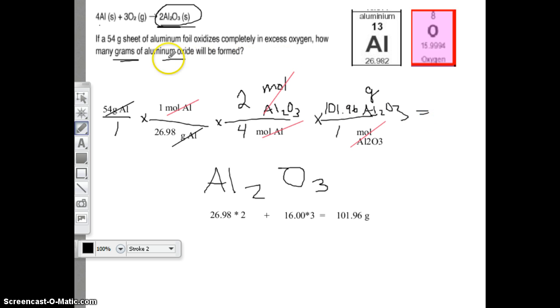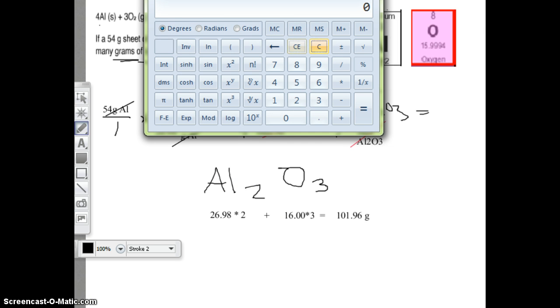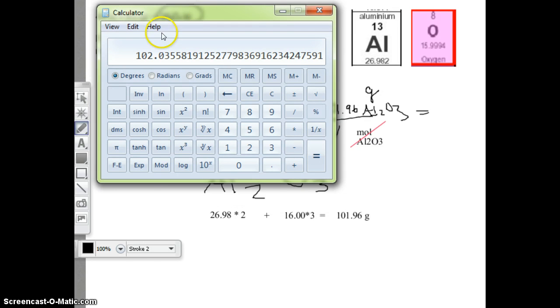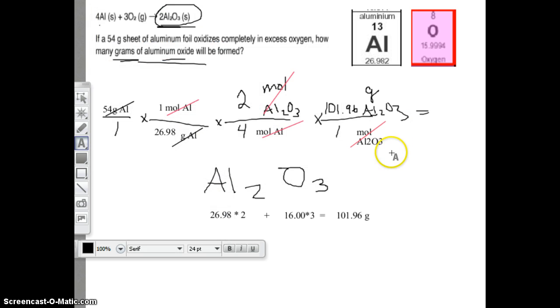We have grams of aluminum oxide, that's what we want for our answer. Let's get our calculator back out. We're going to put in 54 times 1 times 2 times 101.96, divided by 26.98 and also divided by 4. Our final answer is 102.04 grams of Al2O3. Hit pause if you need to, copy down what you need to, and let's do the next problem.